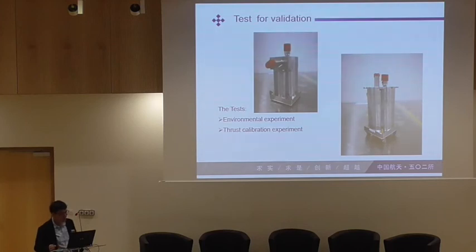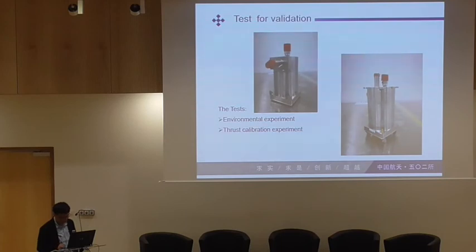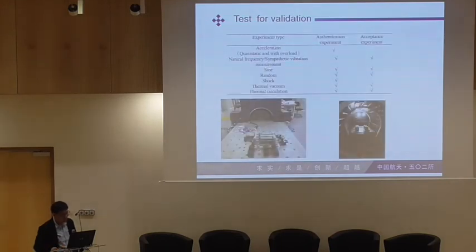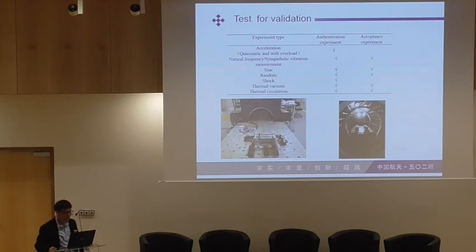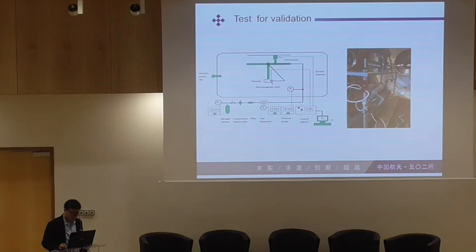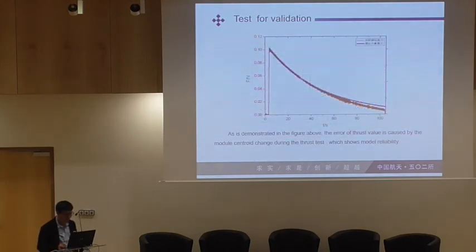For validation, we conducted environmental experiments including vibration and thermal cycling, and functional configuration experiments. This is the test table for the validation. The experimental types include vibration, random shock, thermal vacuum, and thermal circulation. This is the thrust test, using a thrust balance to measure the thrust. We can also see the thrust values plotted along time.